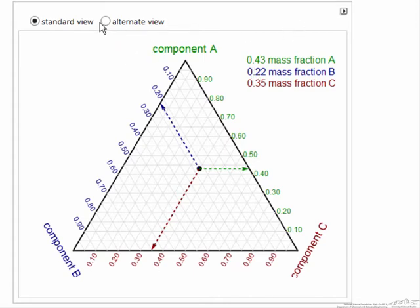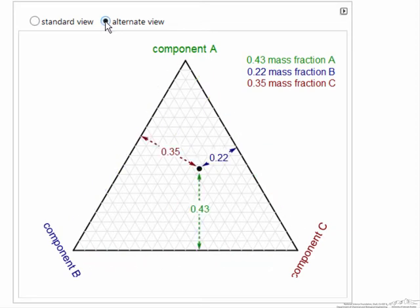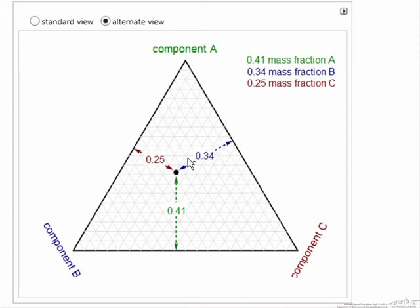Alternate way of looking at this to better understand, again we can move the point, and now notice one way you can look at this is we're 34% of the distance between this point and this side of the triangle,